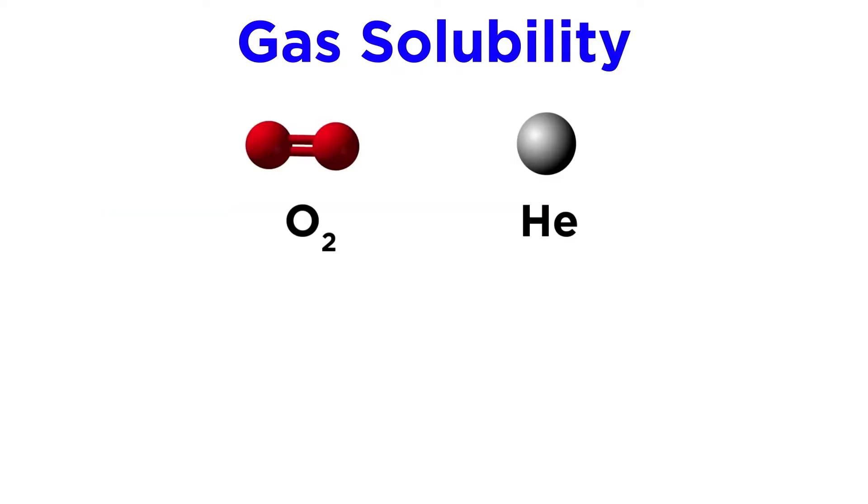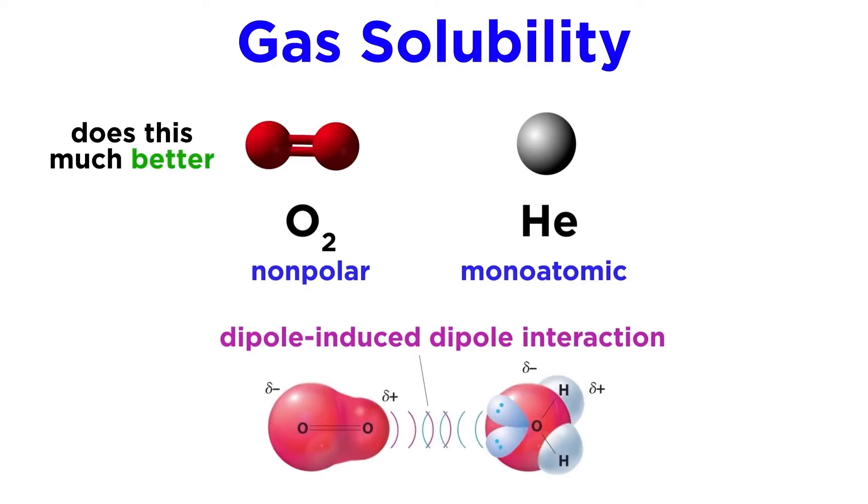Take for example oxygen and helium. Oxygen is completely nonpolar, and helium is monoatomic, so there are no dipoles present for interaction in either of these substances. That means that oxygen and helium are only able to interact with water molecules in the way of dipole-induced dipole interactions, which are rather weak. However, a molecule of oxygen is able to make much stronger interactions of this type than a helium atom can, as it is much larger than a helium atom, and therefore can exhibit stronger momentary or induced dipoles. That's why oxygen is three times more soluble in water than helium.